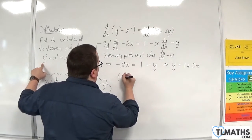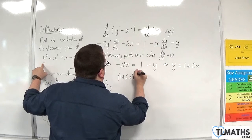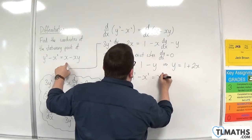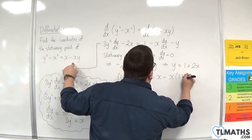So, we then have y³, which is (1 + 2x)³, take away x², is equal to x, take away x times y.